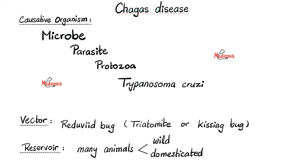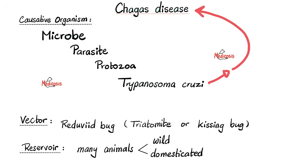Today's topic: Chagas disease. What's the cause? It's a microbe. Be specific — is it a bacterium, virus, fungus, or parasite? It's a parasite. Is it a helminth or a protozoan? It's a protozoan. Which trypanosoma? Is it Trypanosoma cruzi or brucei? It is Trypanosoma cruzi. Trypanosoma cruzi causes American trypanosomiasis, also known as Chagas disease, whereas Trypanosoma brucei causes African trypanosomiasis.